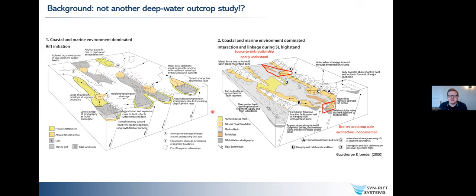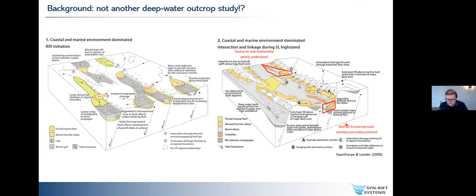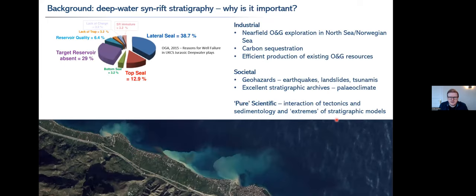Most of what we know about deep water deposits comes from foreland basins or passive margins, and not so much from within rifts. Within rift basins, we generally have this tendency to move from quite shallow isolated depocenters into more linked and very deep depocenters that can be next to small highs providing sediment. But the actual relationship between sediment source areas and sinks is relatively poorly understood. Because these things tend to get buried when formed and tend not to get exhumed, we have very few case studies to give an idea of bedset to outcrop scale architecture.